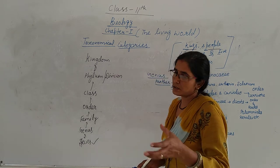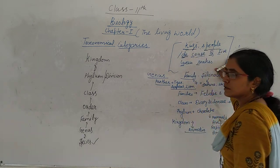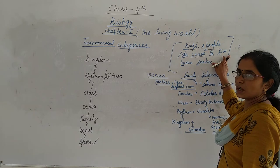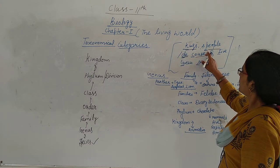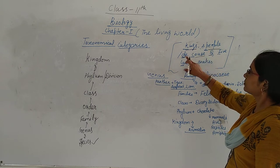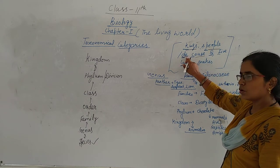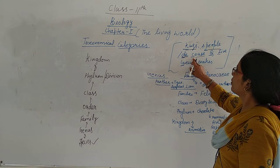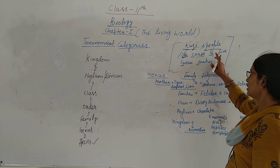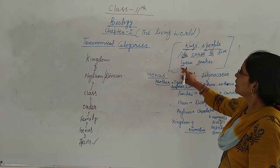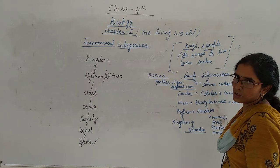Let's discuss using a sentence for easy learning. You can learn the categories using this sentence: Kings, Peoples, Die, Because, Of, Five, Green, Snakes. Kings = Kingdom. People = Phylum. Die = Division. Cause = Class. Of = Order. Five = Family. Green = Genus. Snake = Species. Is that clear? So using this sentence, you can remember all the taxonomical categories.